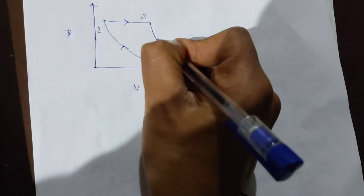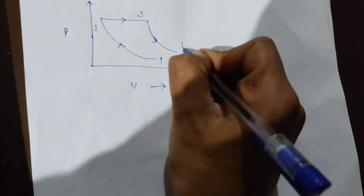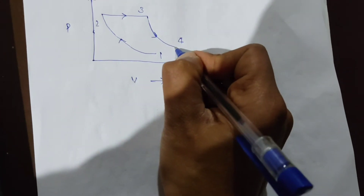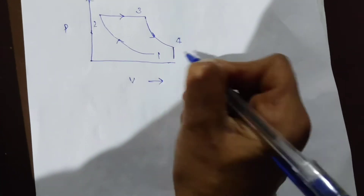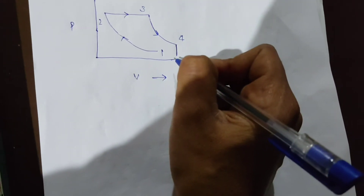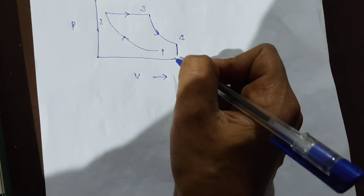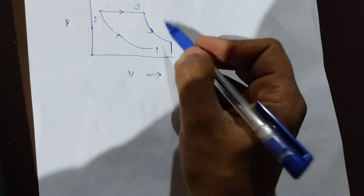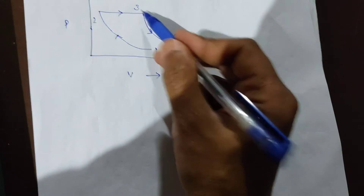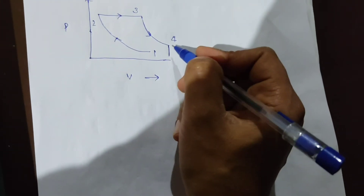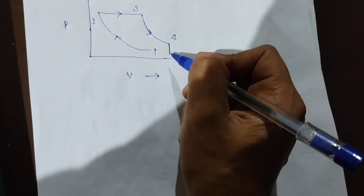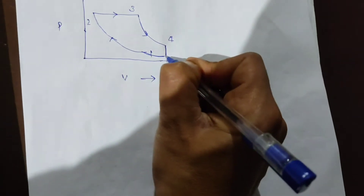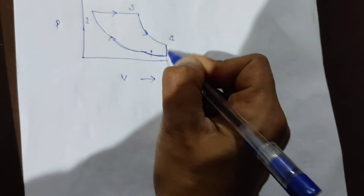The constant pressure line represents process 2 to 3. Process 3 to 4 is an isentropic expansion process, and process 4 to 1 is the heat rejection process at constant volume.